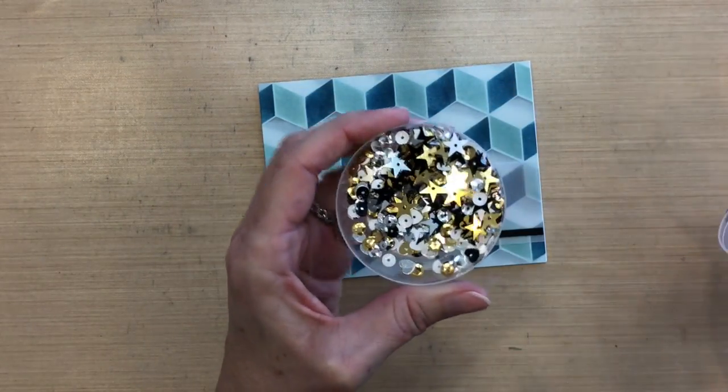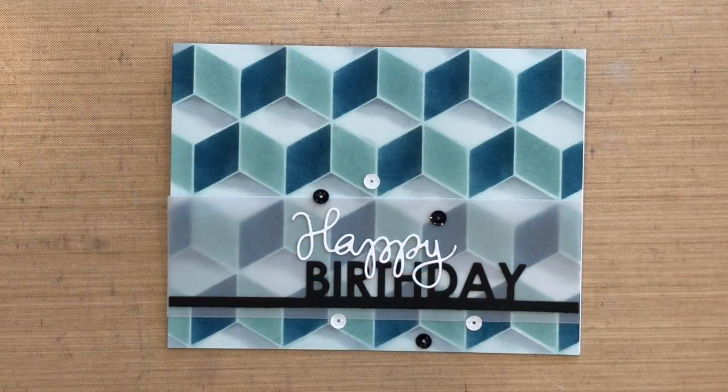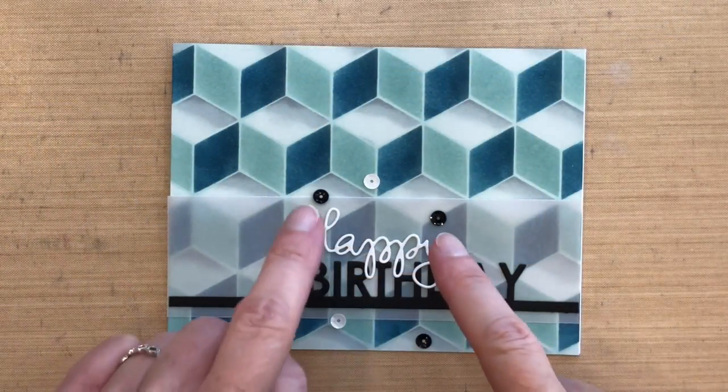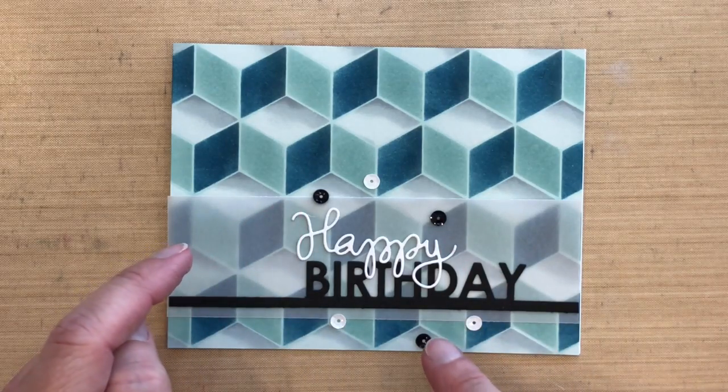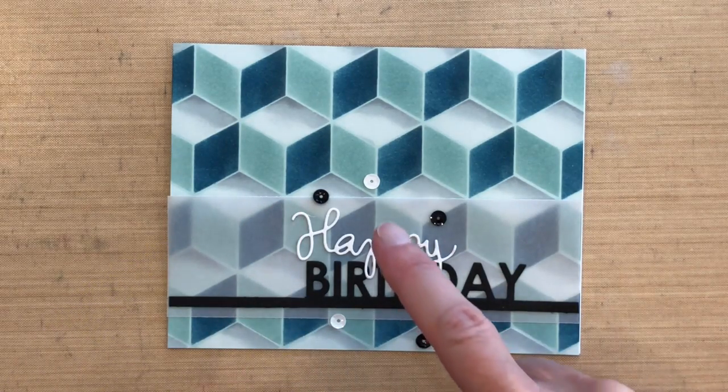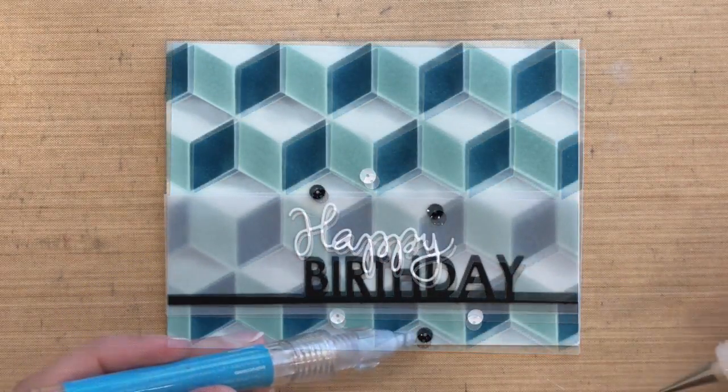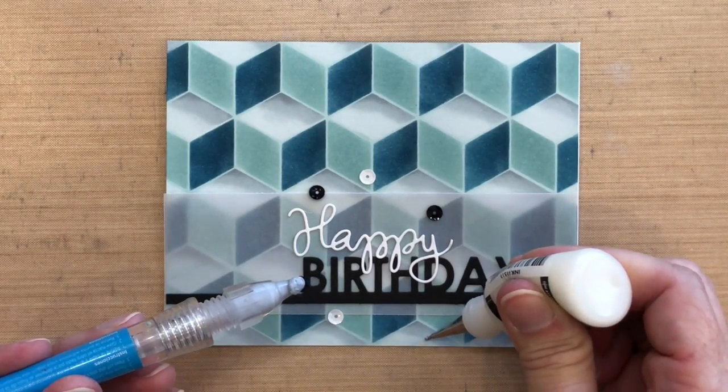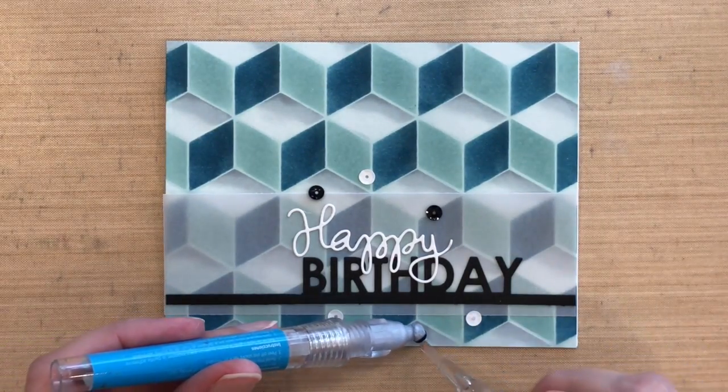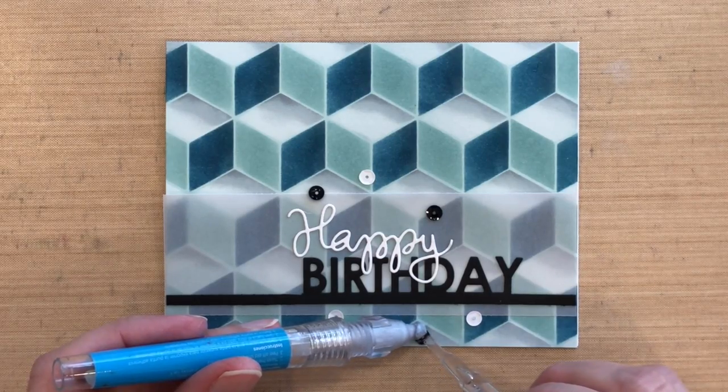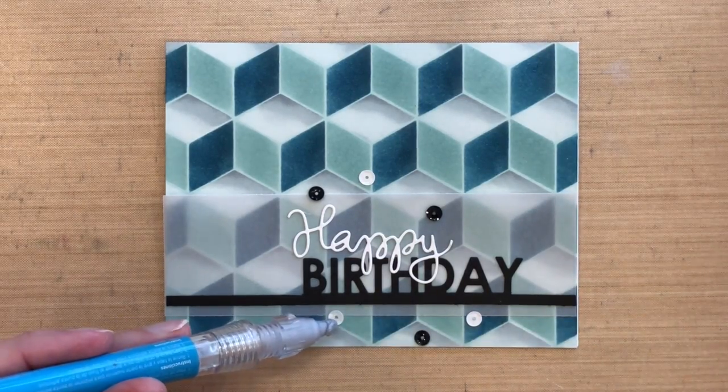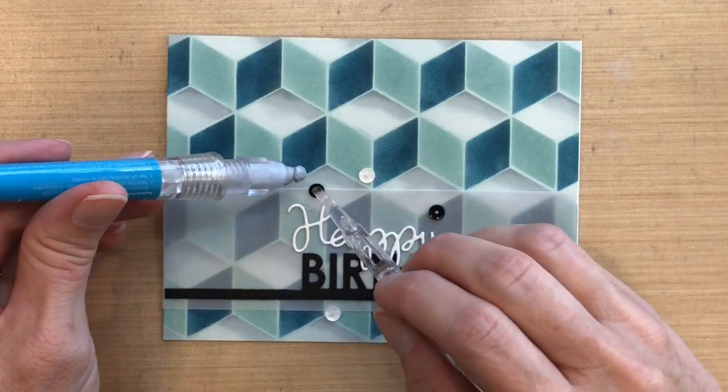This is my favorite sequin packet by Stampin' Up. It's got white, black, clear, gold, and silver. So I've placed six—I've got two black at the top, one in the middle, two white at the bottom, one at the top. So you can see how I've alternated, and also they are not equidistant apart, so it looks like they were sort of randomly thrown on the card.